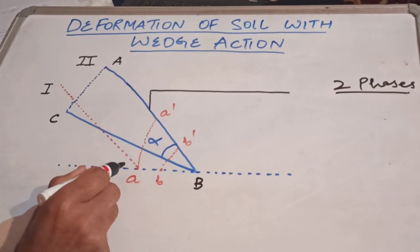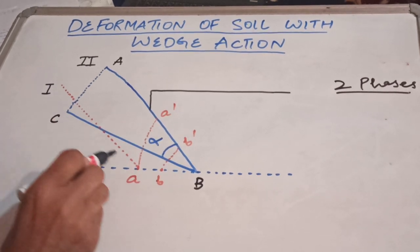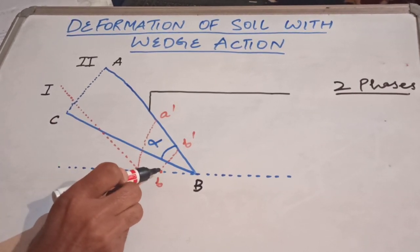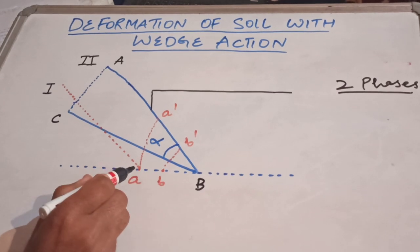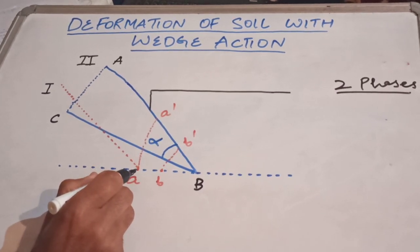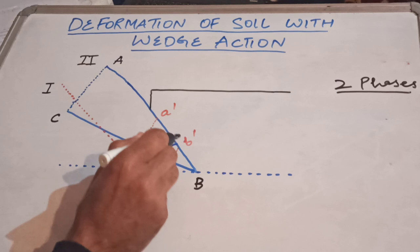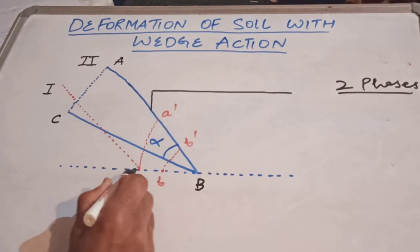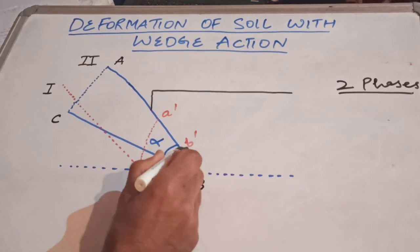Your wedge was first here at position number one. As it moved forward, it caused the deformation. It broke the soil and the soil that was at point A moved up to here. Then as it moved further, the soil that was at point B came up here.